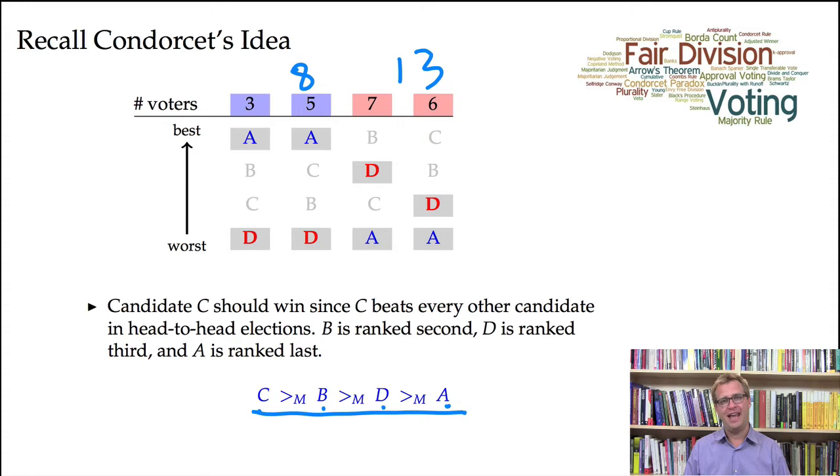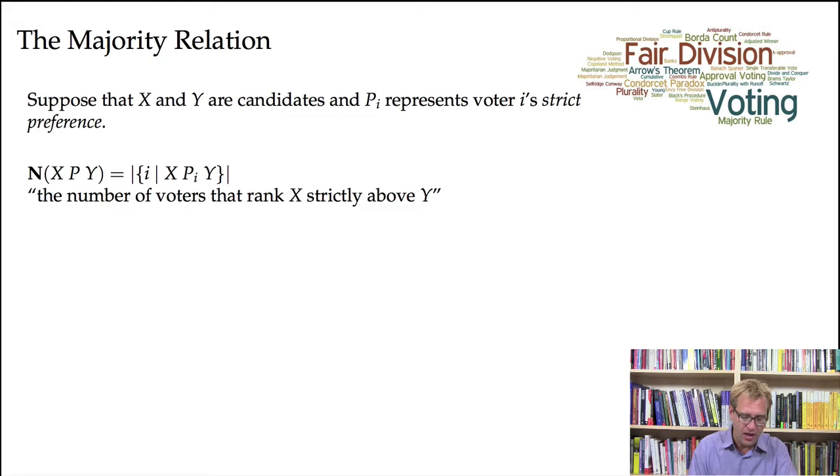And we can define an ordering over the candidates that's derived or defined in terms of this majoritarian idea. So the idea is that C is ranked, so we say C is greater than or equal, greater than sub M, meaning, this just means that a majority of people in the election rank C strictly above B.